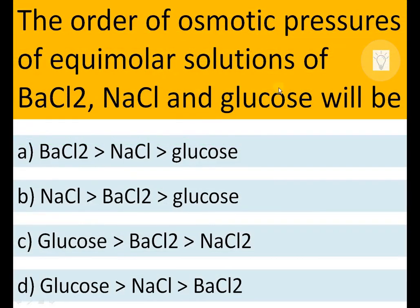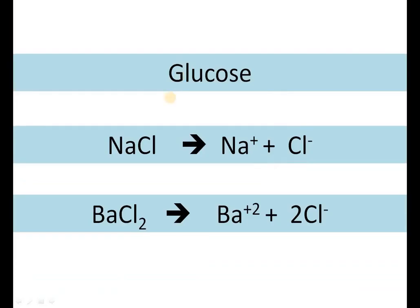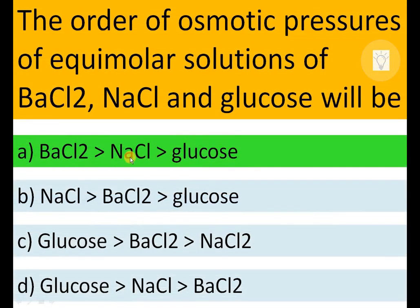The order of osmotic pressures of equimolar solutions of BaCl₂, NaCl, and glucose: the number of particles or ions produced determines osmotic pressure. Glucose is a single molecule; NaCl ionizes into Na⁺ and Cl⁻ (two ions); BaCl₂ gives Ba²⁺ and 2Cl⁻ — three ions. Therefore the order is BaCl₂ > NaCl > glucose. A is the correct option.